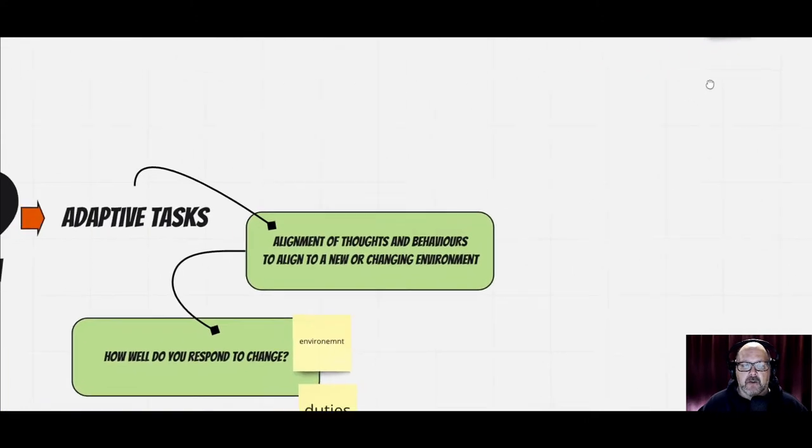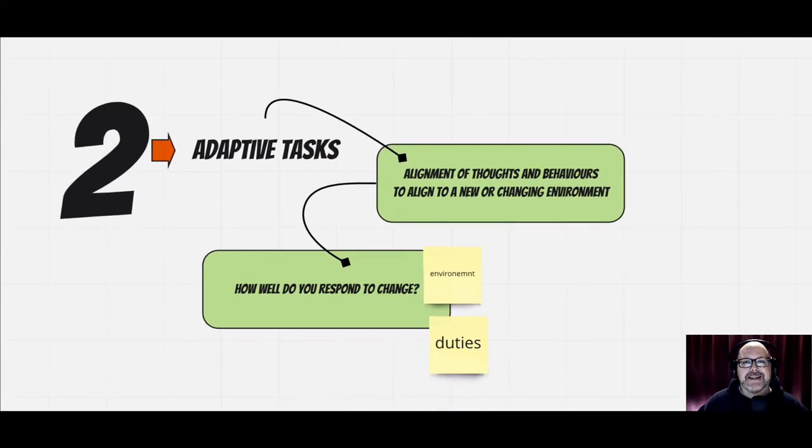Now, the second one is called adaptive tasks. What we mean by that is it's an alignment of thoughts and behaviors to align to a new or changing environment. Open systems thinking comes into play here, because when we are working within an open system or our organization is susceptible to the environment, we call that an open system. When we're talking about adaptive tasks, it's really about how well do you adapt to change?